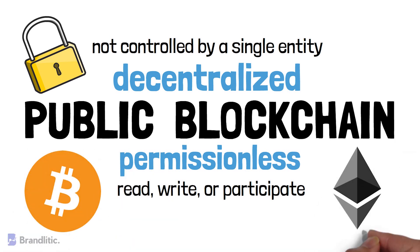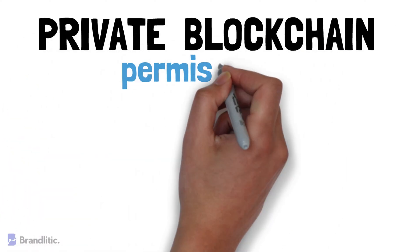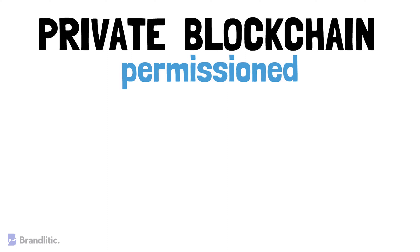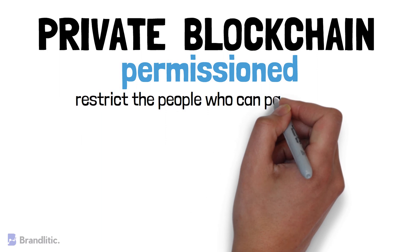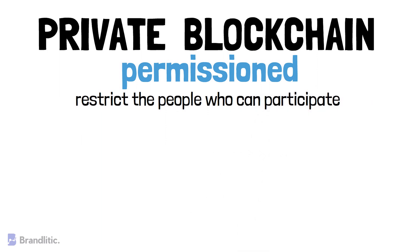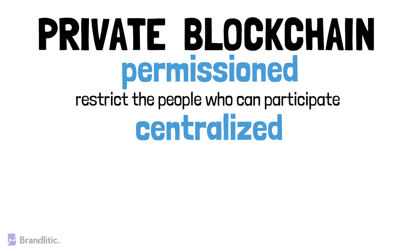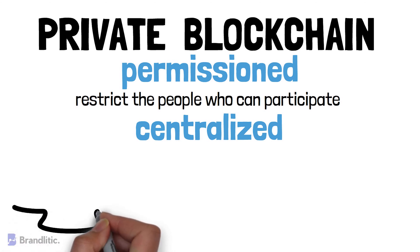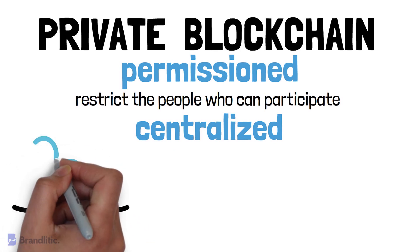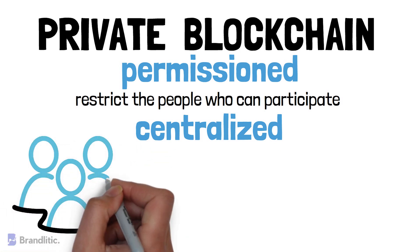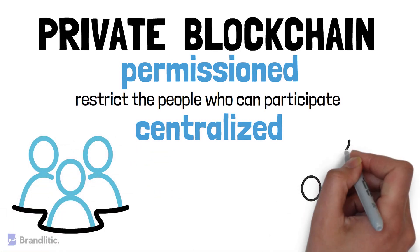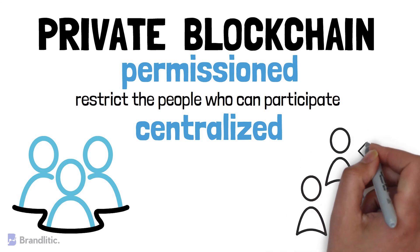Bitcoin and Ethereum are well-known examples of public blockchain. On the other hand, a private blockchain is a permissioned blockchain — that is, private blockchains work on the basis of access control which restricts the people who can participate in the network. Generally, it is centralized as there are always one or more entities which control the network, and this often leads to reliance on third parties to transact. In a private blockchain, only the entities participating in a transaction will have knowledge about it.